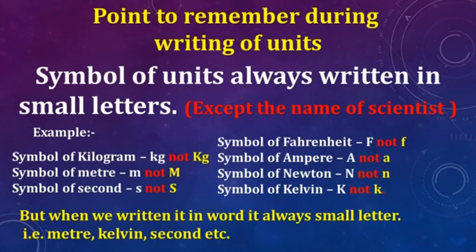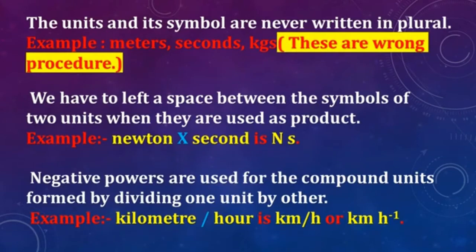When writing a unit, some points must be remembered. The symbol of a unit is always written in small letters — for example, kg, m, s in small letters. However, Fahrenheit, Ampere, Newton, and Kelvin are written in capital letters because they are names of scientists. When writing the unit in words, it is always written in small letters. We never write units in plural form — writing meters, seconds, or kgs is wrong. We must write meter, second, and kg. When writing two units in product form, leave a space between them.